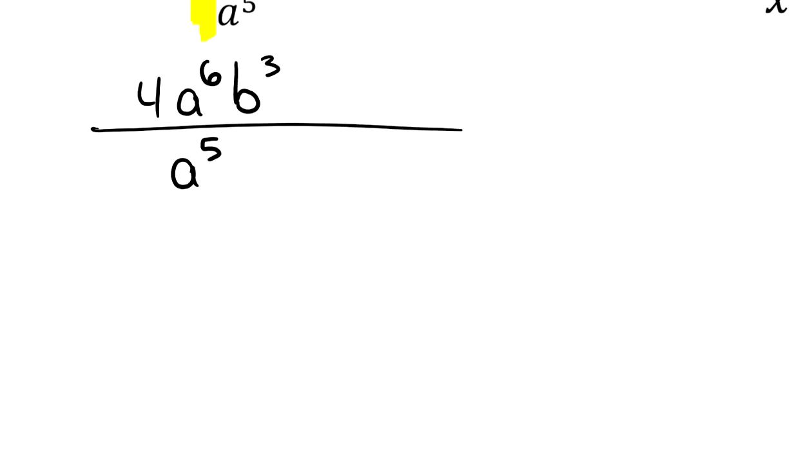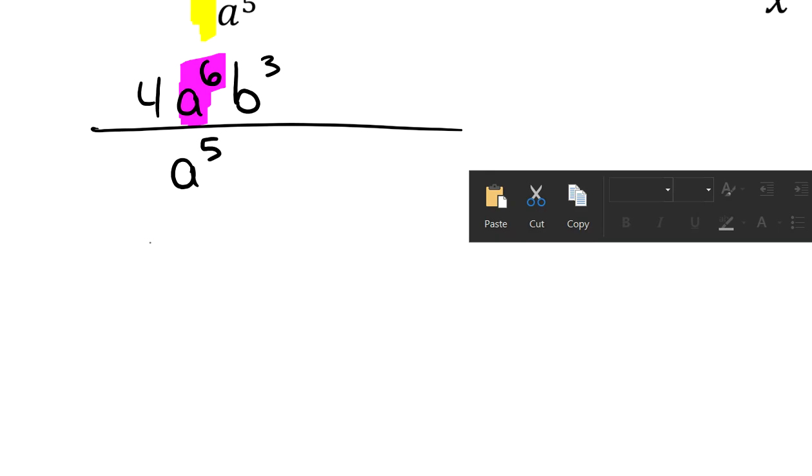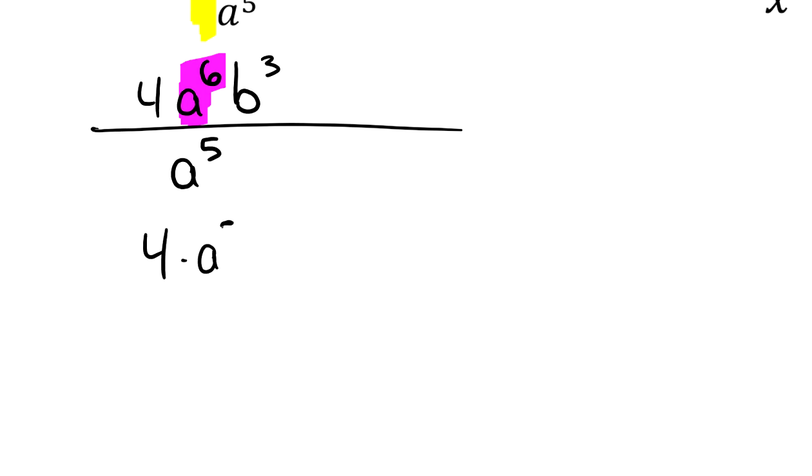Well, I can choose to rewrite this, and I'm going to. I'm going to look at this a to the 6th power. I'm going to rewrite it so that I can very easily see my giant 1. So I'm just going to rewrite this as 4 times a to the 5th times a to the 1st times b to the 3rd. And then down in my denominator, I've got this a to the 5th still. So my motivation there, I just find that I make fewer errors when I look at this carefully and I think about it like this.